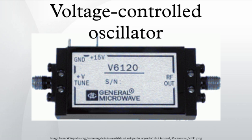Leeson's expression for single-sideband phase noise in dBc/Hz uses the following parameters: FO is the output frequency, QL is the loaded Q, FM is the offset from the output frequency, FC is the 1/f corner frequency, F is the noise factor of the amplifier, K is Boltzmann's constant, T is absolute temperature in kelvins, and PS is the oscillator output power. Commonly used VCO circuits are the Clapp and Colpitts oscillators. The more widely used of the two is the Colpitts, and these oscillators are very similar in configuration.